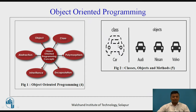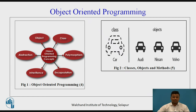For example, suppose the class is 'car' — different types of cars will be the objects. Similarly, in mechanical engineering, 'machines' is the class, and types of machines like lathe machine, drilling machine, milling machine, shaping machine, and planing machine are the objects. So machines will be in the class and the different types of machines will be the objects.